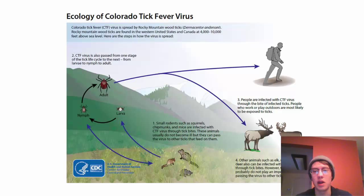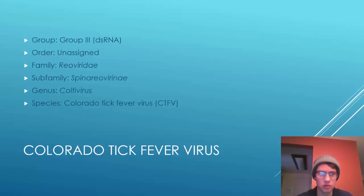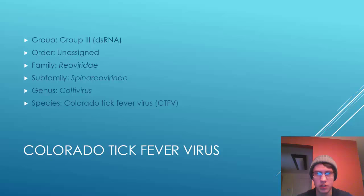People infected with the Colorado Tick Fever virus will become sick. The infectious agent is the Colorado Tick Fever virus. It's group three with double-stranded RNA. It has an unassigned order. The family is Reoviridae, the subfamily is Spinareovirinae, the genus is Coltivirus, and the species is the Colorado Tick Fever virus.